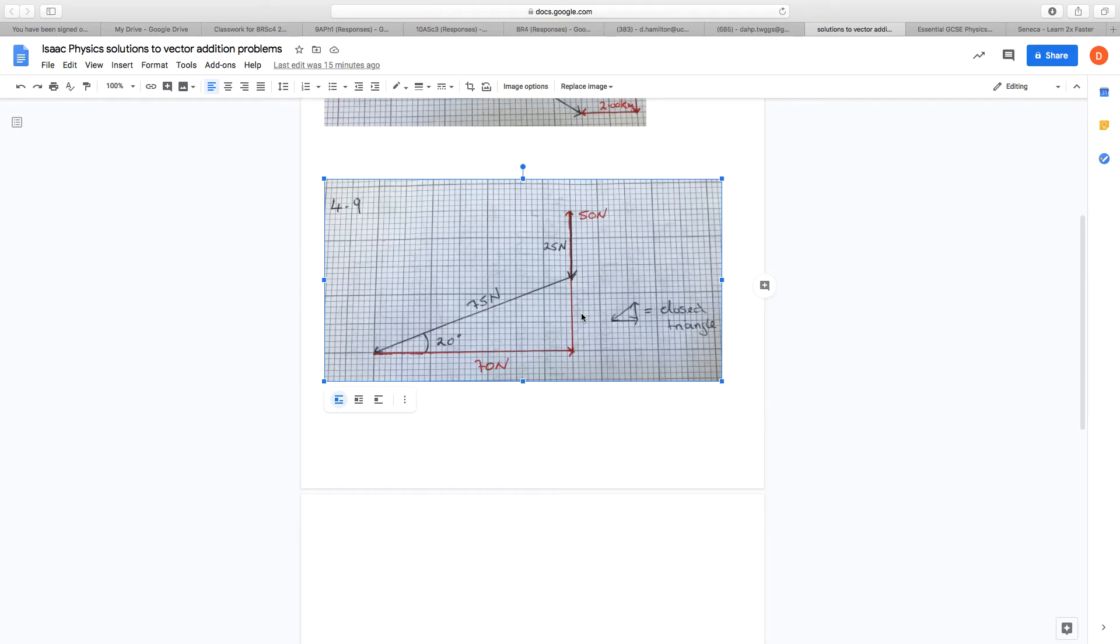If you have a closed triangle, or a closed polygon, a closed shape, when you draw all your vectors, the right length and directions, then your object is in equilibrium. That's an important point for you to note there. So here we have 70, and a net of the 50 and 25 of 25. 70, 25. So if you just had those two forces, then your resultant force would go from here to here. You would have the 75 newton resultant force.